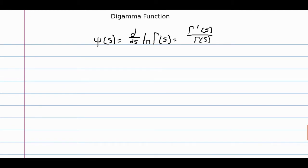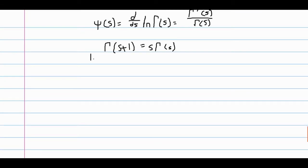Let's look at how we can recursively define this. We start with the recursive definition of the gamma function, which is that gamma of s plus 1 is equal to s times gamma of s. And if we take the natural logarithm, we get the natural log of gamma of s plus 1 equals the natural log of s plus the natural log of gamma of s.